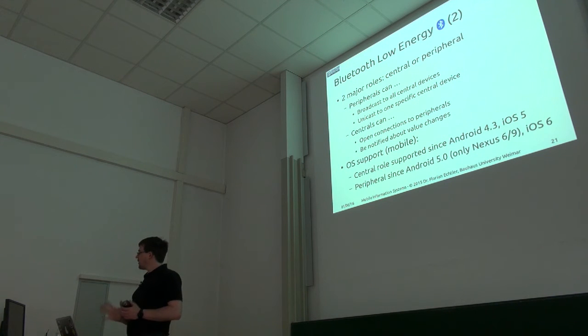So one important aspect is that you have two roles here, central and peripheral. And peripherals can broadcast to everybody in the area, and they can also set up a dedicated channel to a central device and, you know, basically make a direct connection to that one central device. And central devices, on the other hand, they can open up connections to one or more peripheral devices and also get specific notifications when a value changes.